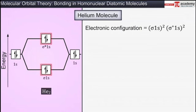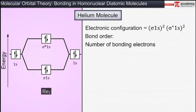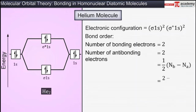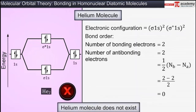From the electronic configuration of helium, we can easily derive the bond order of the molecule. The number of electrons present in both the bonding and anti-bonding orbitals is 2, so the bond order is equal to (2 minus 2) divided by 2, which equals 0. This proves that a helium molecule is unstable and therefore does not exist.